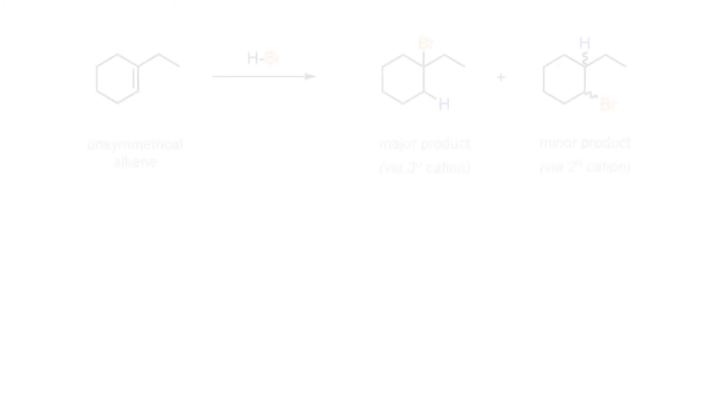Overall, the addition of an acid such as HBr to an alkene is known to go through carbocation intermediates to give alkyl halides. When the starting material is unsymmetrical, regioselective addition is observed with the major product arising through the most stabilized intermediate.